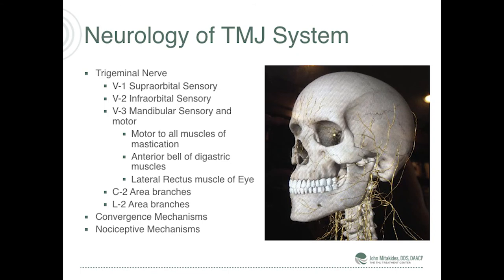The trigeminal nerve runs this entire system — it's the largest nerve in the head besides the brain, with three major branches: V1 at the eyebrow, V2 at the lower crest of the orbit, and V3 in the mandible. Motor function is V3; the upper two are sensory only. This nerve supplies the anterior belly of the digastric, all the muscles of mastication, and also the lateral rectus muscle in the eye. So with head pain or jaw distortion, you can get double vision. There are also convergence problems and nociceptive issues where the source of pain is one place and the site of pain is somewhere else.